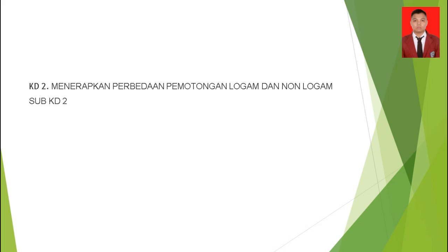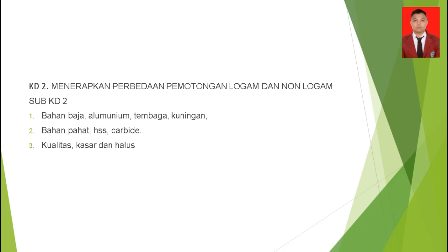Selanjutnya, menerapkan perbedaan pemotongan logam dan non-logam. Sub-kompetensi yang pertama: bahan — baja, aluminium, tembaga, kuningan. Bahan pahat terdiri dari HSS (High Speed Steel) dan karbida. Yang ketiga, kualitas juga sangat diperhatikan dari kasar hingga halus.